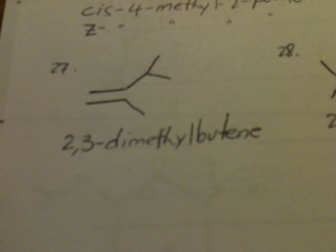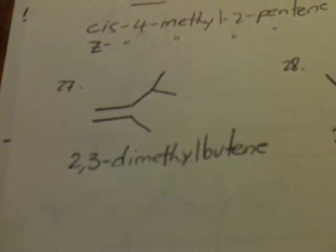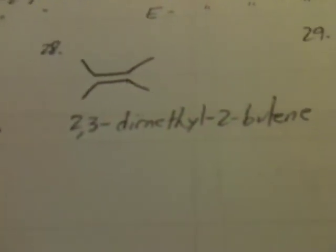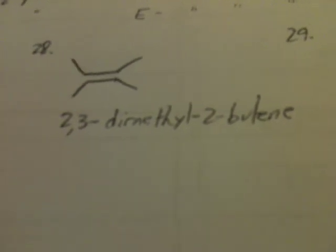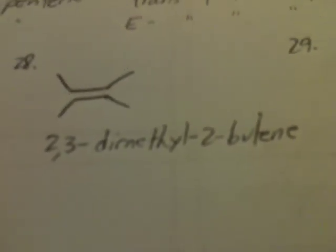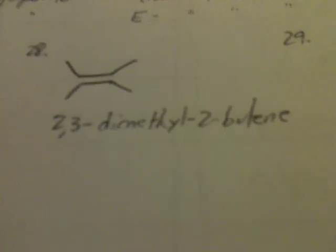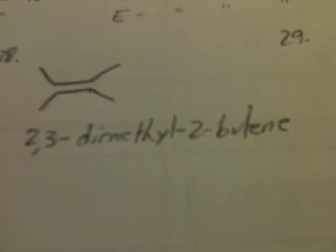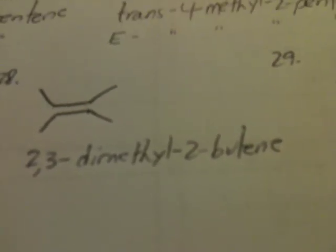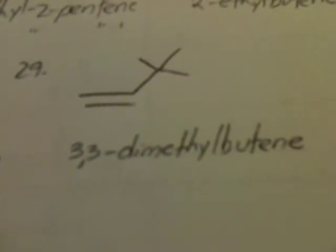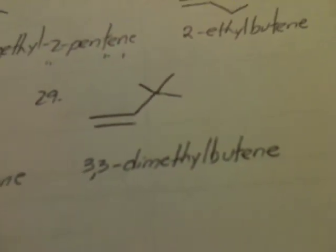The 27th isomer is 2,3-dimethyl-butene. The 28th is 2,3-dimethyl-2-butene. Notice how we've now moved to the 4-carbon atom chain. And finally, the 29th isomer is 3,3-dimethyl-butene.